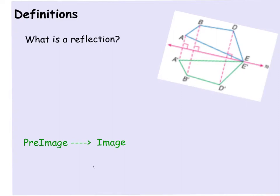In the three videos that you're going to be watching tonight, we're going to be talking about reflections, translations, and rotations. You're going to use these things to help you complete the flipbook project, which we'll be talking about in class. We're going to start in this video with reflections, and hopefully we all understand that a reflection is usually what we see when we look in a mirror, or sometimes a piece of glass or a window.